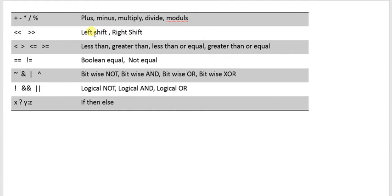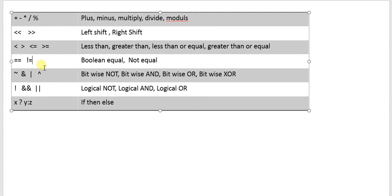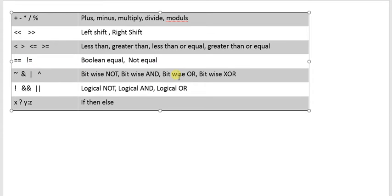The shifting operator uses double less-than for shift left or double greater-than for shift right. The relational operators include less-than, greater-than, less-than-or-equal-to, and greater-than-or-equal-to symbols. Equality is represented by double equal-to, and inequality is represented by logical-not followed by the equality symbol. Bitwise operators include logical-not, logical-and, logical-or, bitwise-and, bitwise-or, and bitwise-xor.